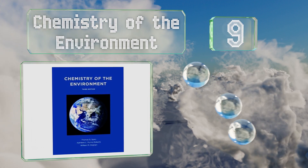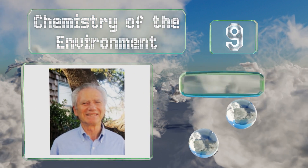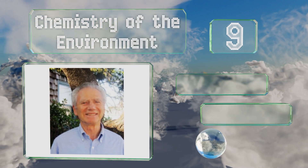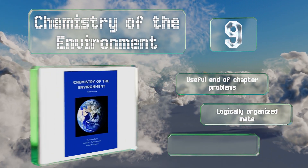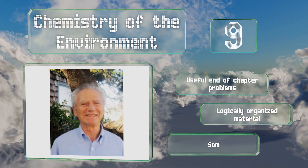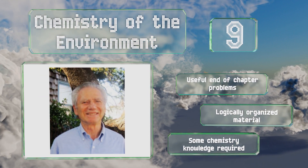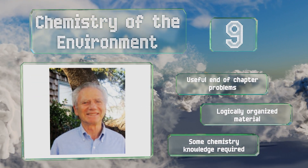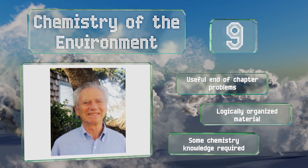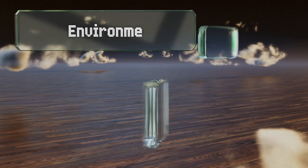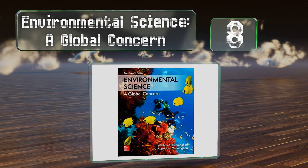At number 9, anyone who already has foundational knowledge in this area and is ready to go deeper might consider 'Chemistry of the Environment.' The themes it looks at include sustainability, the hydrosphere, and biospheres, as well as an explanation of chemical cycles. It features useful end-of-chapter problems and the material is logically organized, but some chemistry knowledge is required.